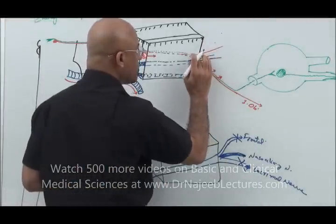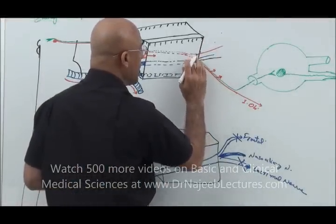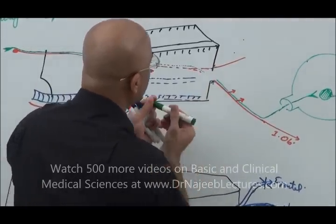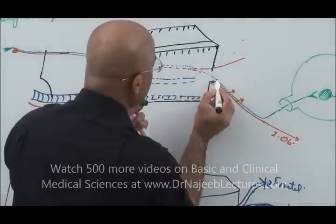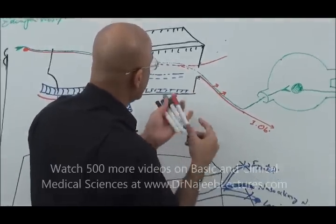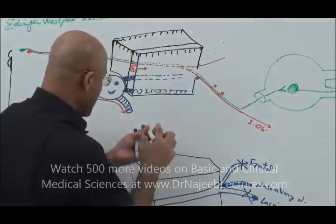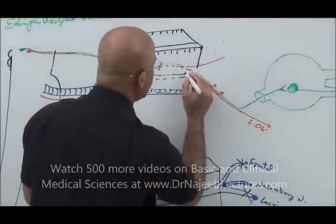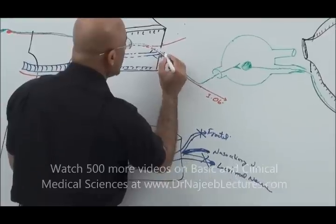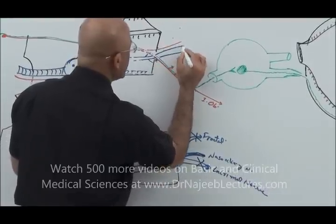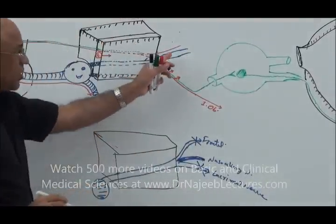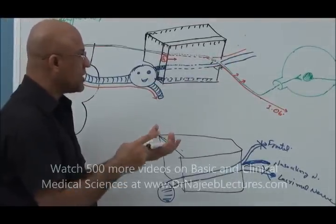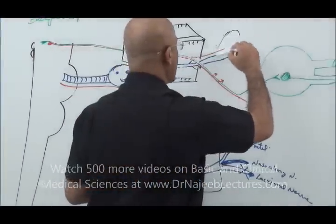Eliminating the frontal and lacrimal branches from the diagram, we focus only on the nasociliary nerve entering the orbit through the superior orbital fissure.